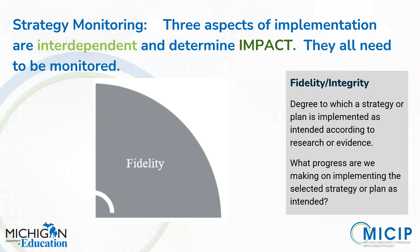With that, we're ready to move on to fidelity — and you'll notice we've attached the word integrity to it as well. Fidelity has to do with the degree to which a strategy or plan is implemented according to research or evidence. We also encourage districts to consider — which is the reason we've added the word integrity — not only the research or evidence, but the specific situation in which the strategy is being implemented. What are those local characteristics that affect our ability to implement the plan with fidelity? The key question is: what progress are we making on implementing the plan as intended?